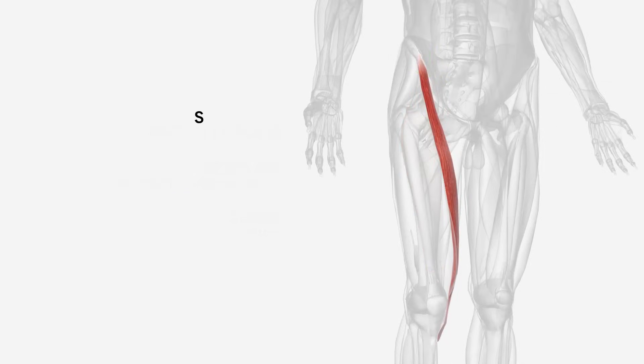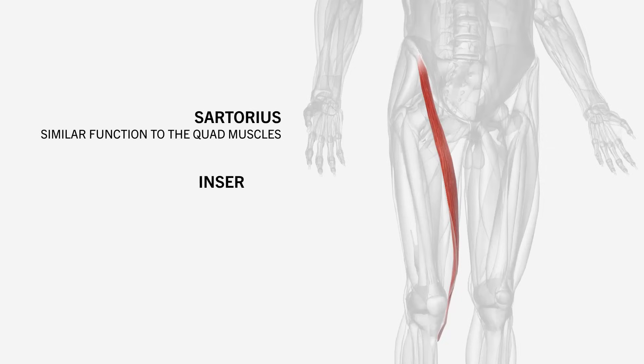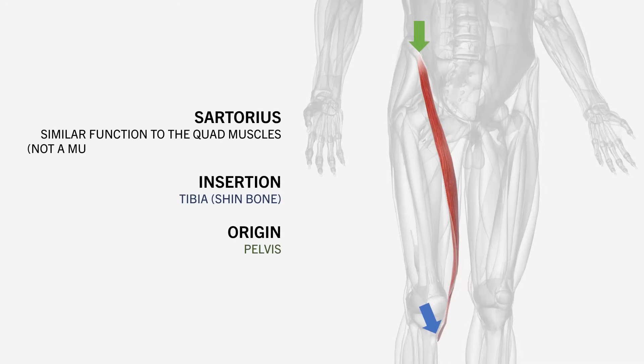We also have another muscle in this region: the sartorius muscle. It is not considered one of the quadriceps muscles but it has similar functions. This is a long and thin muscle which inserts on the inside of the tibia or shin bone just below the knee, and it originates from the pelvis like the rectus femoris. We aren't going to discuss how to train the sartorius since it will likely get trained indirectly when targeting the other quad muscles.